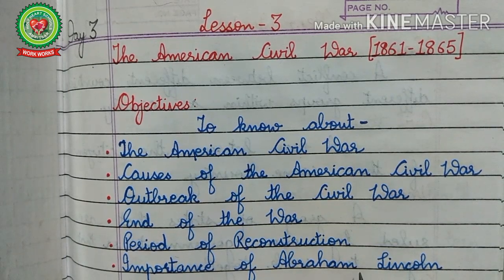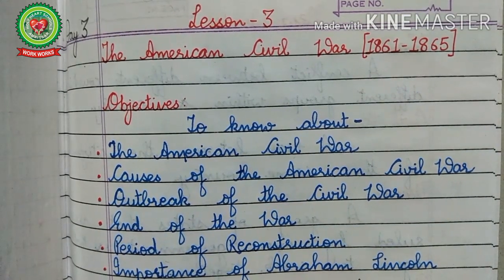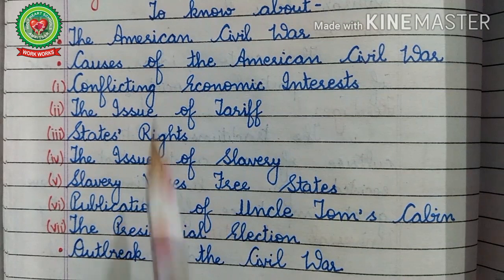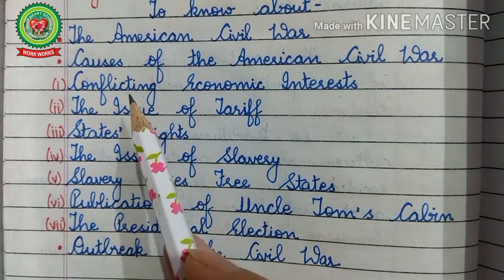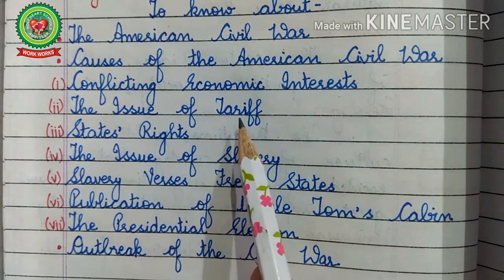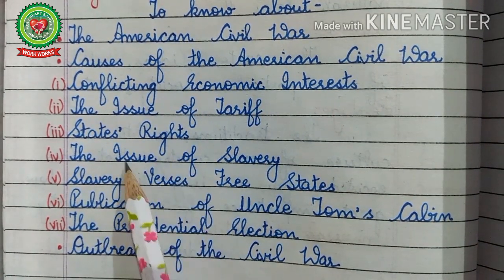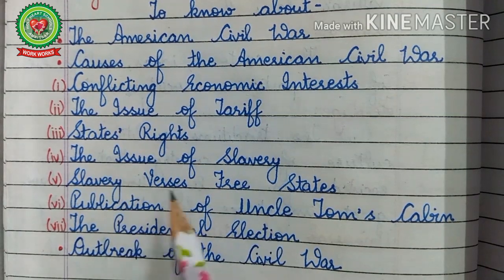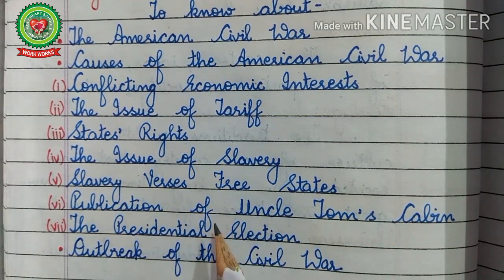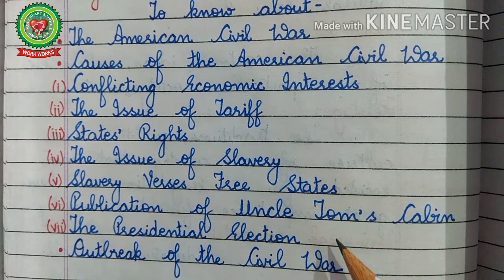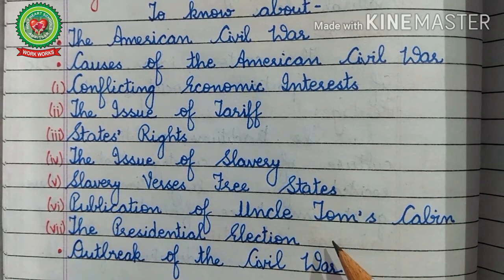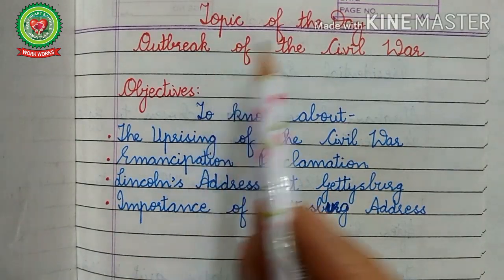Earlier we had discussed about the Civil War and its causes. Those causes included conflicting economic interests, the issue of tariff, states' rights, the issue of slavery, slavery versus free states, publication of Uncle Tom's Cabin, and the presidential election. All these causes resulted in the outbreak of the Civil War.